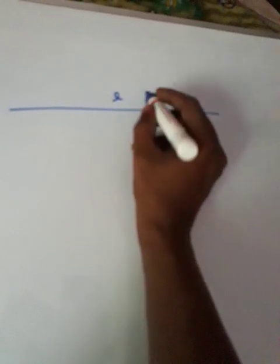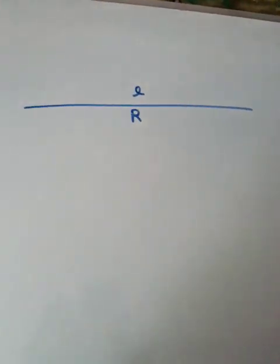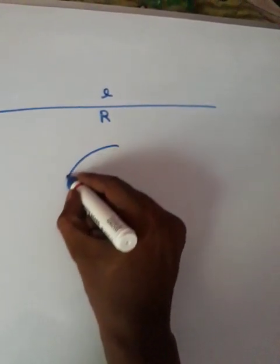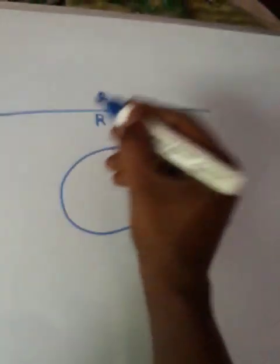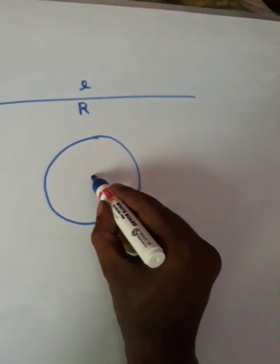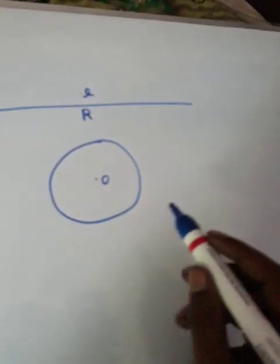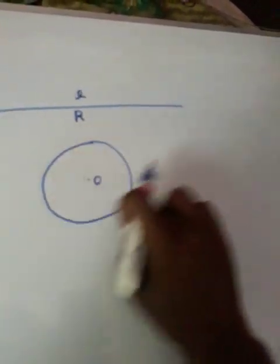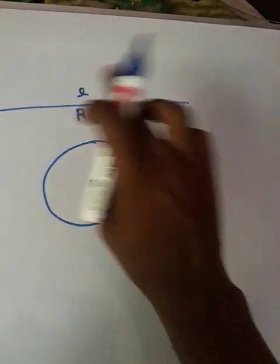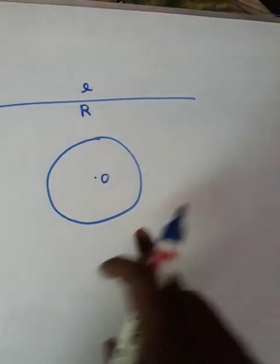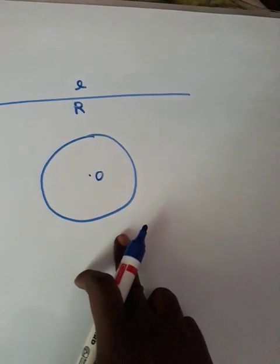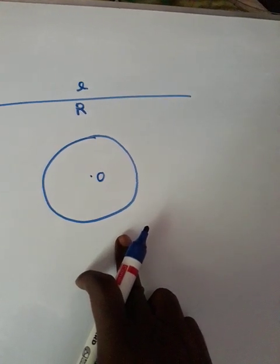Let us take a problem today. This is a wire of length L with resistance R. Now I bend this wire to form a circle. The center of the circle is O. The total length of the wire, that is the perimeter of the circle, is 2π into radius, which is equal to the length of the wire.